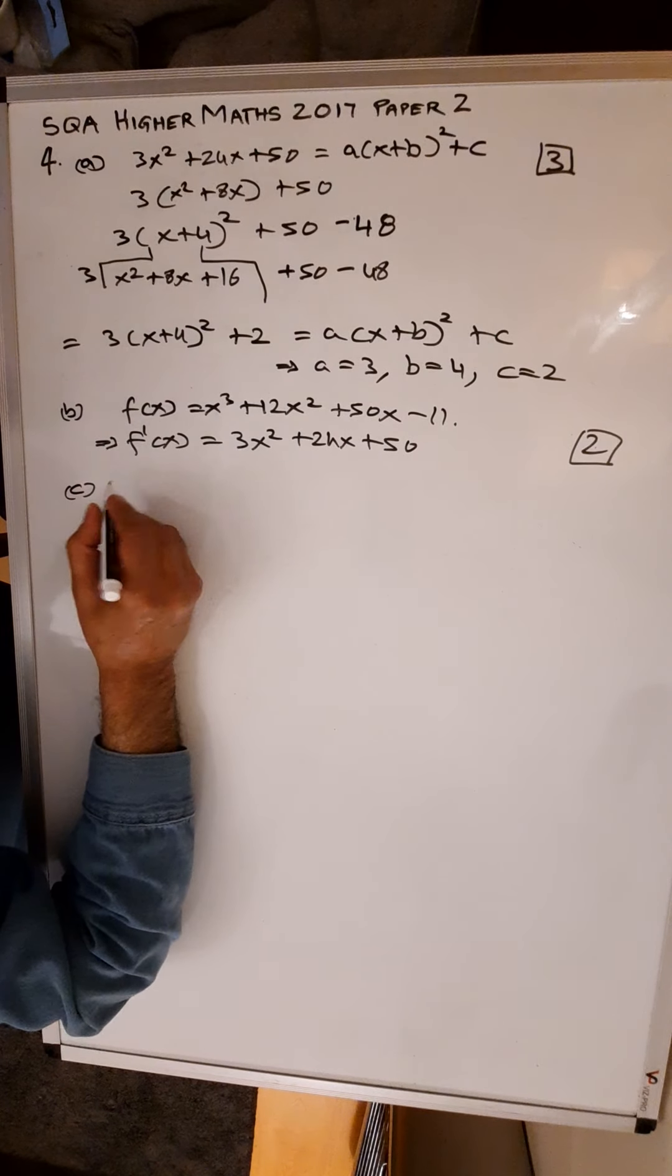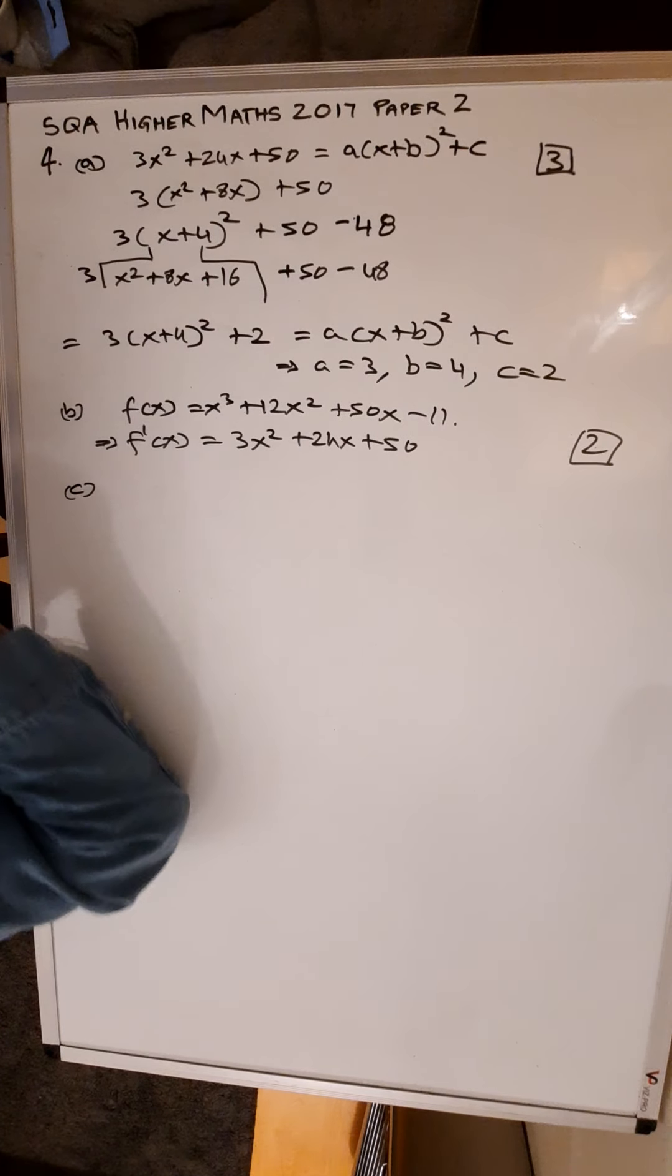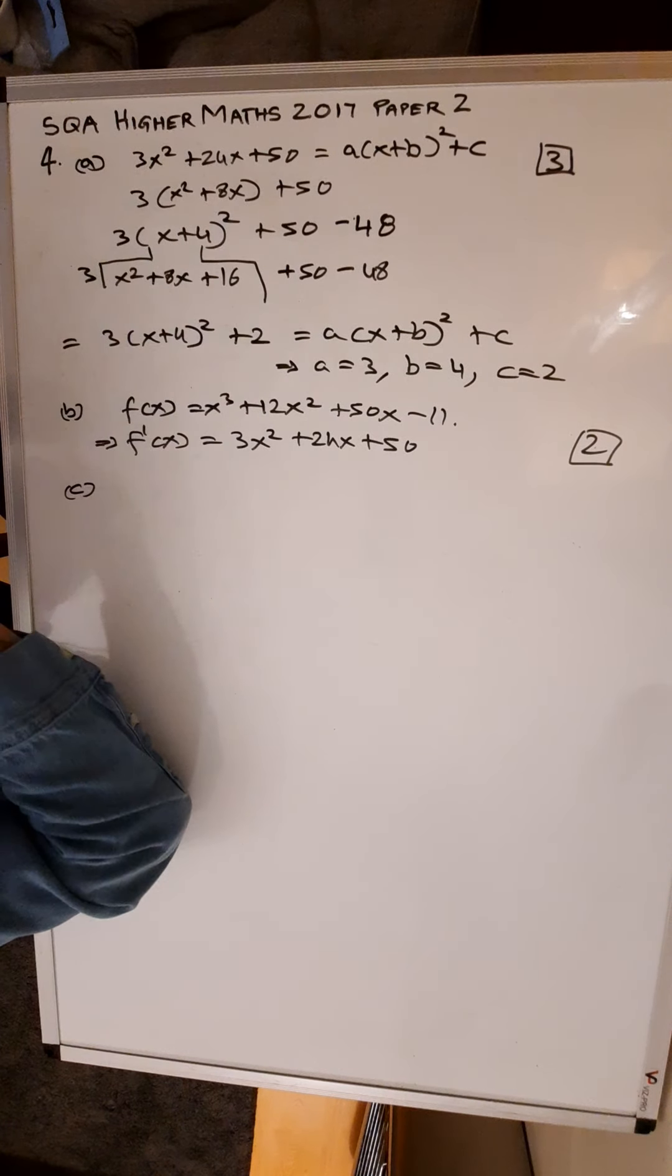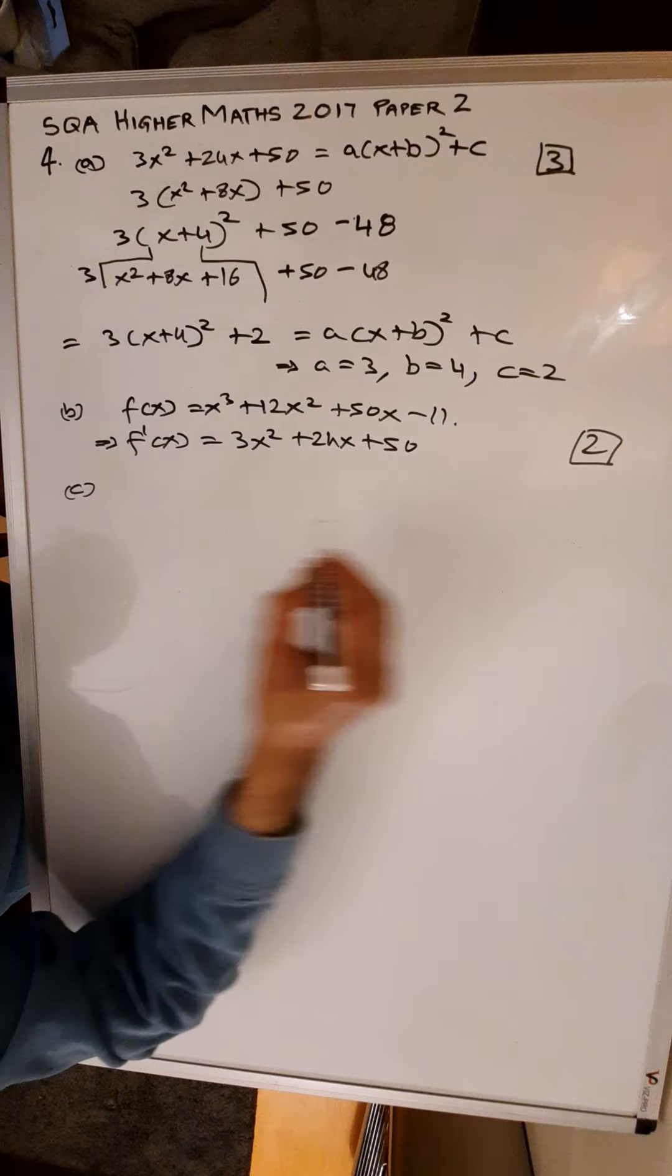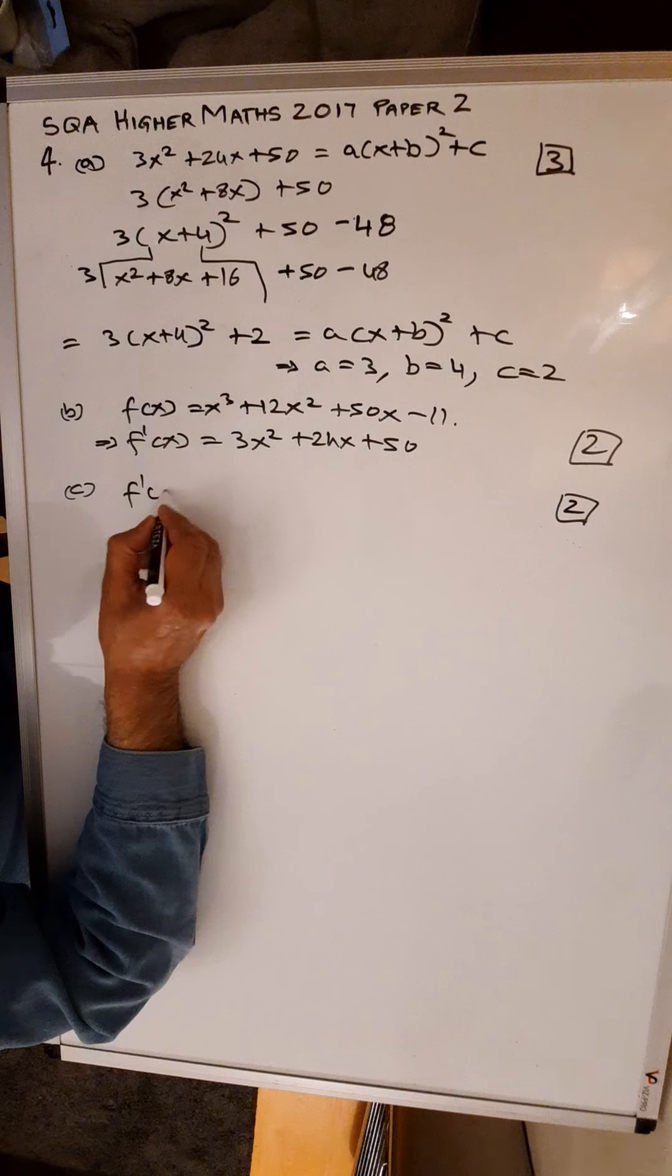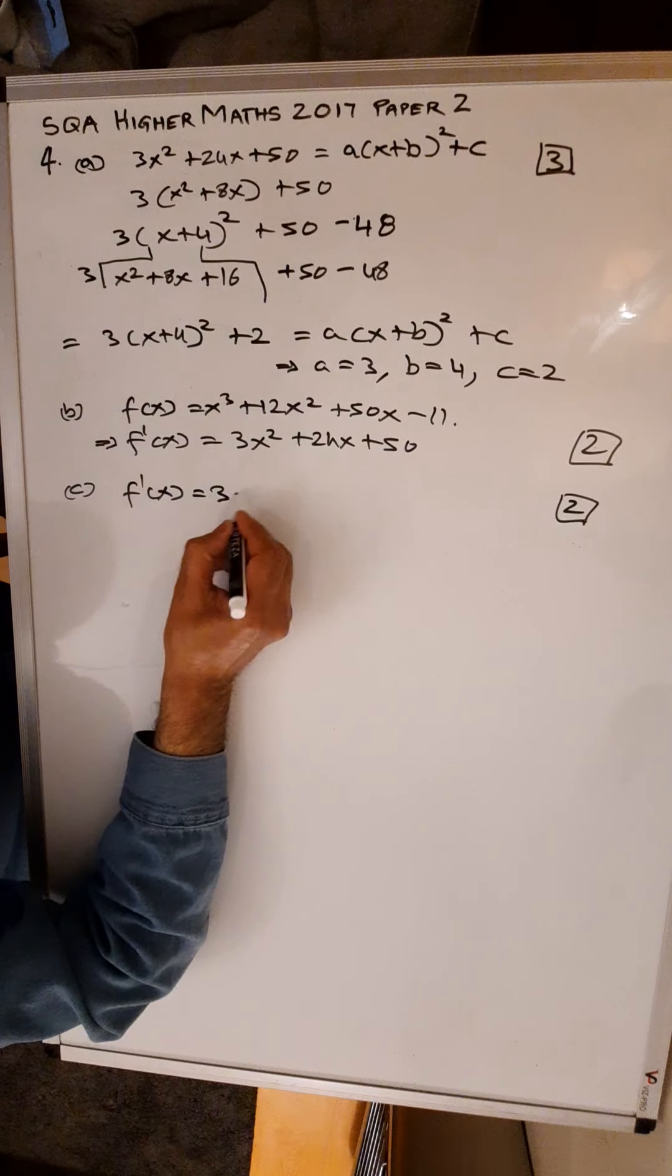Hence or otherwise, explain why the curve with equation y equals f(x) is strictly increasing for all values of x. This again is for 2 marks.